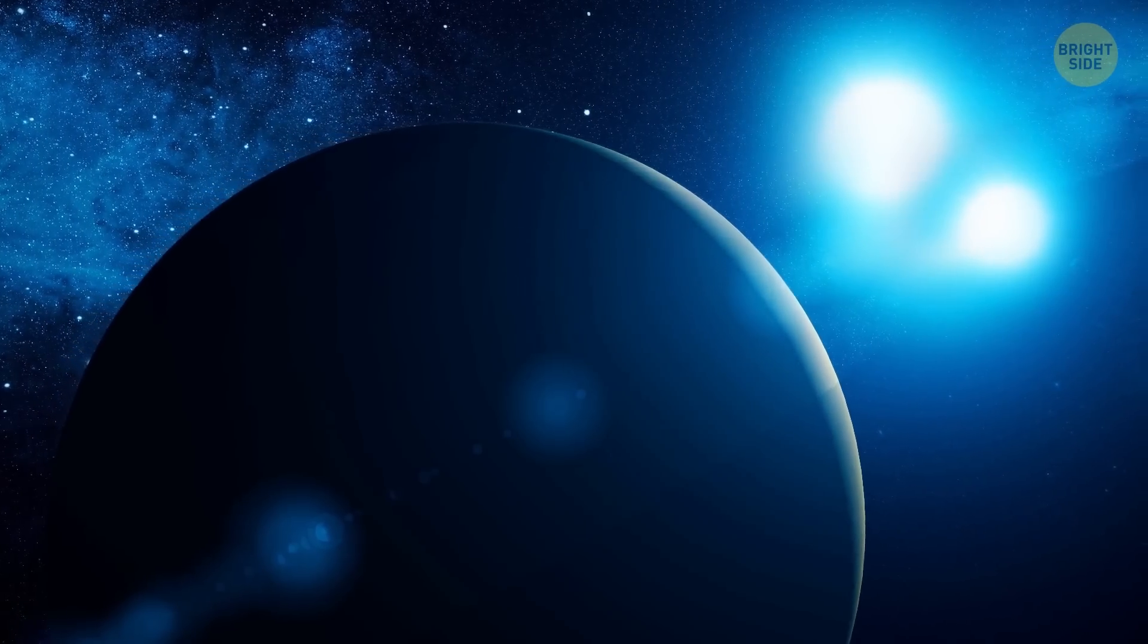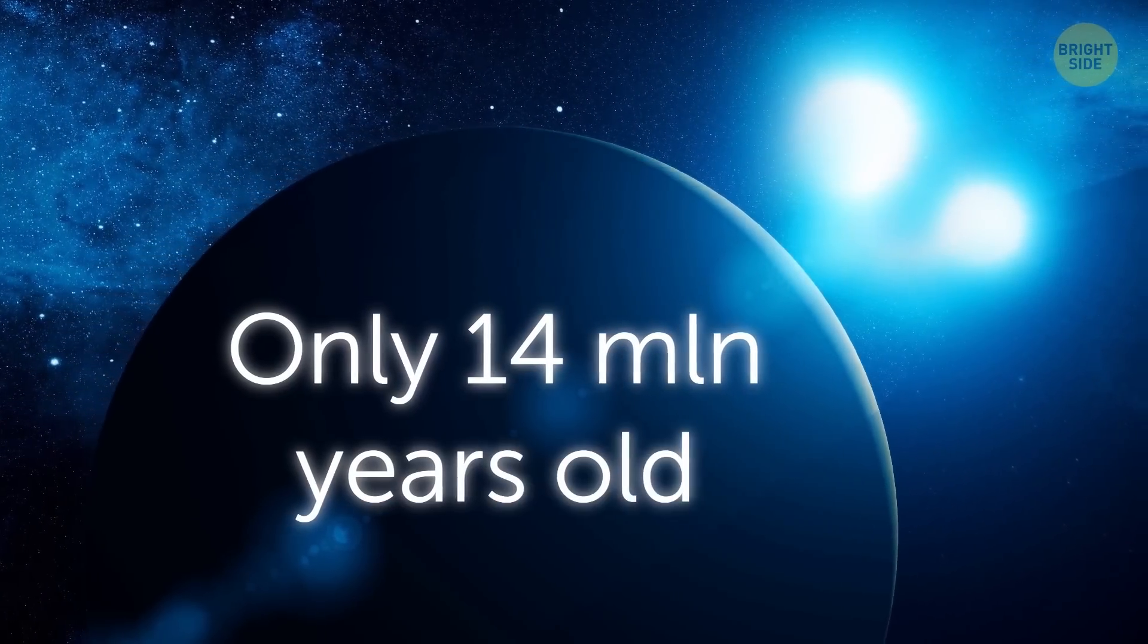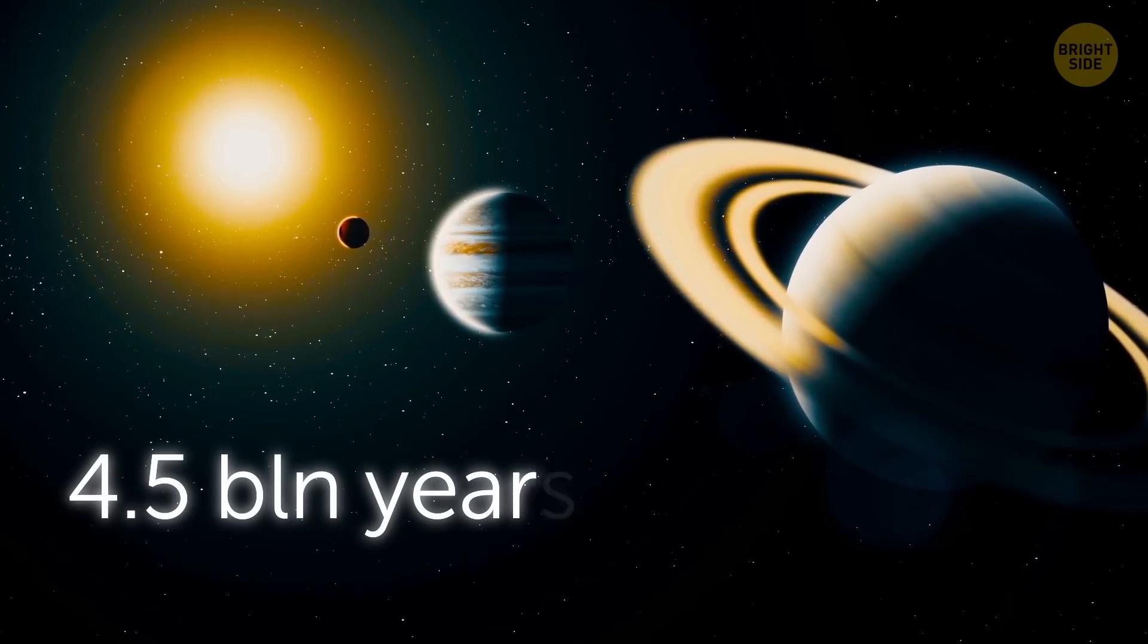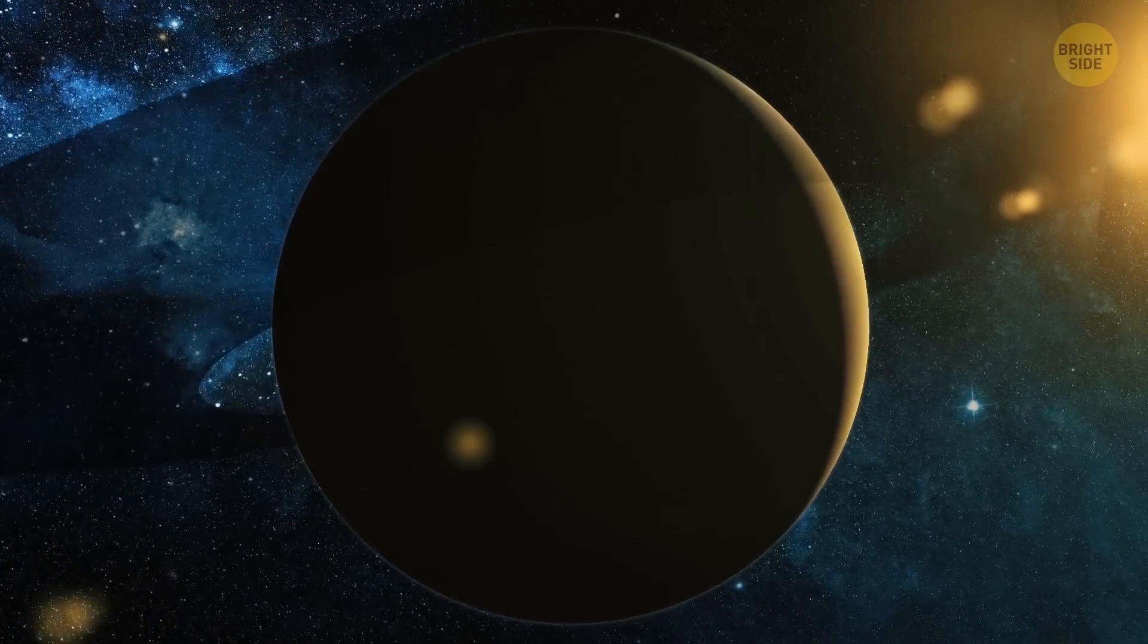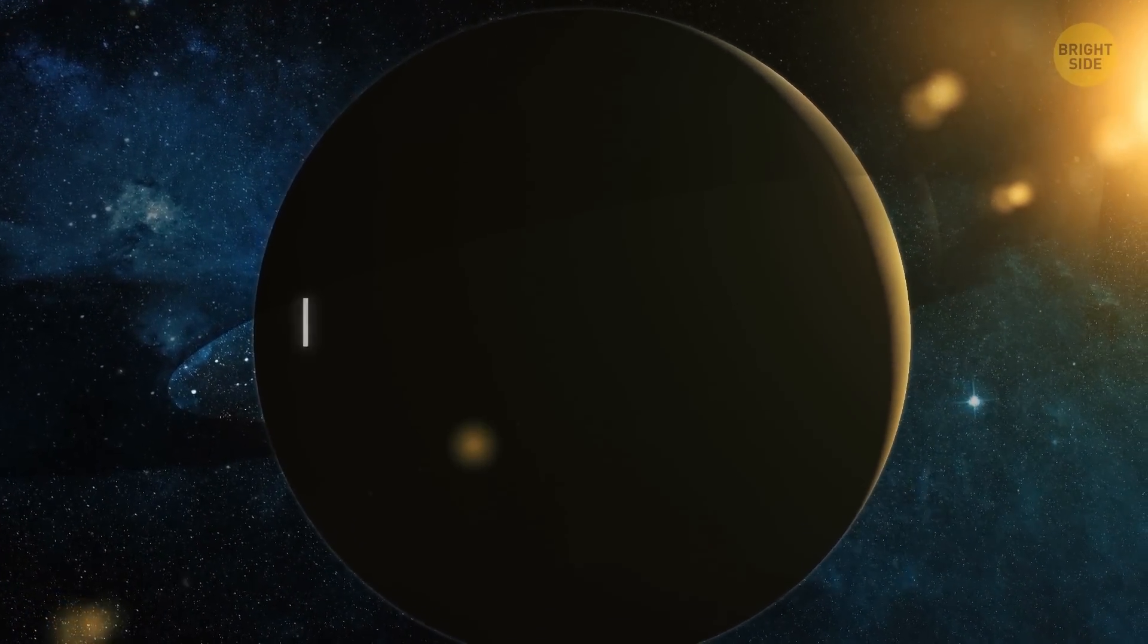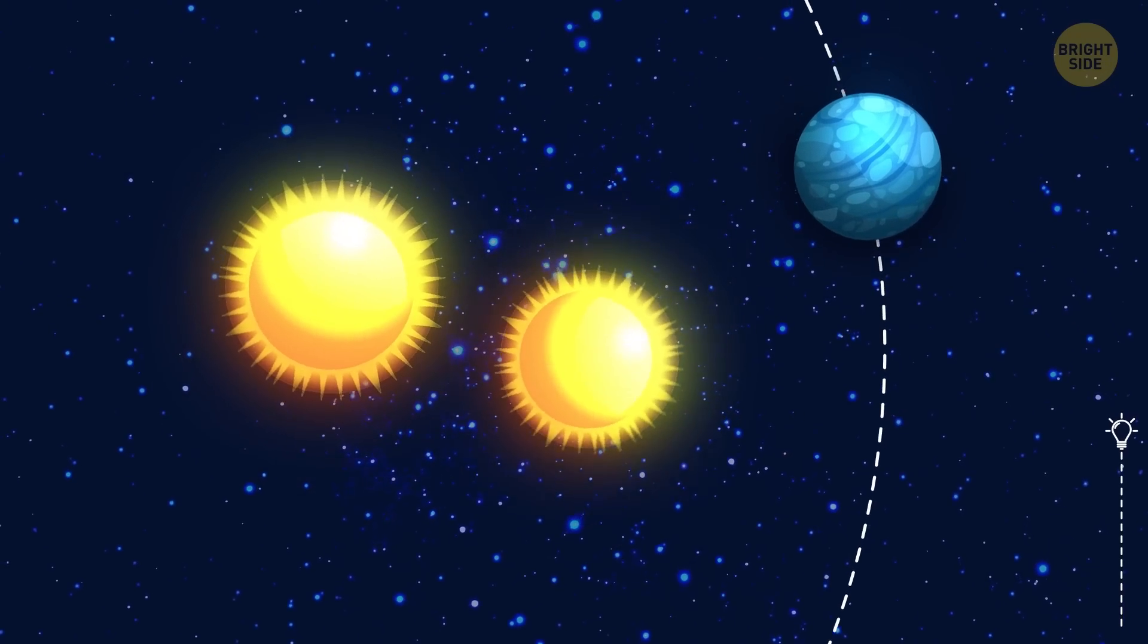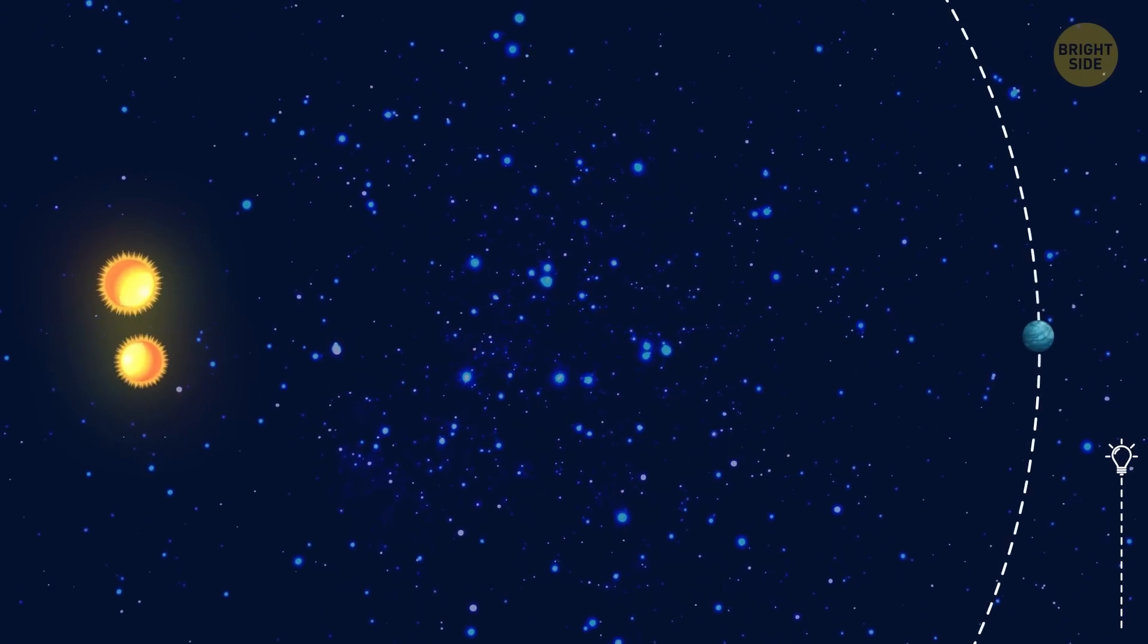What's even stranger is that the system is still really young, only 14 million years old. Just for a point of reference, our system is 4.5 billion years old. How's it possible for a planet this big to form this far from its parent star is just incomprehensible.